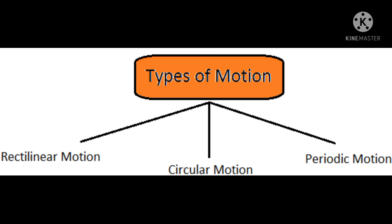Now we have three types of motion: rectilinear motion, circular motion, and periodic motion. So these are the three types of motion. Let us briefly discuss about these three types.